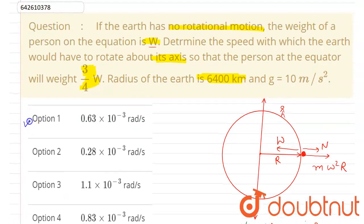option 1, and this is equal to 1/1600 radians per second, which we got after solving this. Thank you.